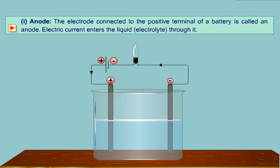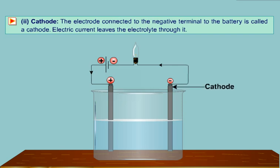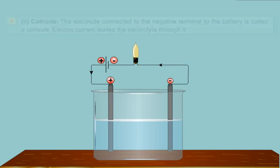Electric current enters the liquid or the electrolyte through it. The cathode, the electrode connected to the negative terminal of the battery, is called a cathode. Electric current leaves the electrolyte through it.